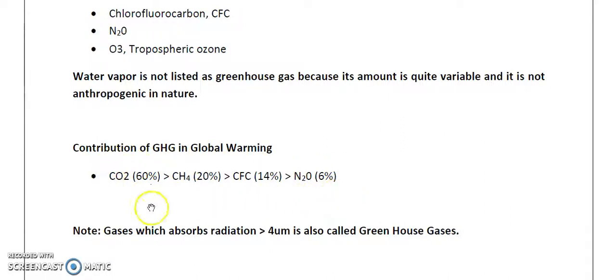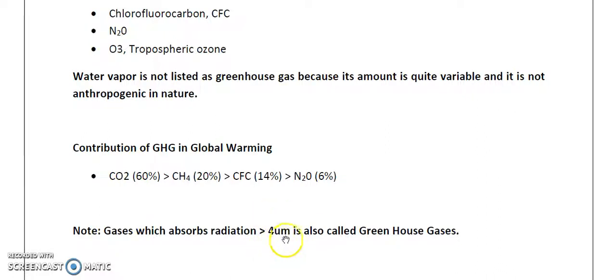A special note: gases which absorb radiation at more than four micrometers are also called greenhouse gases. So it is quite obvious that if a gas absorbs at more than four micrometers, it qualifies as a greenhouse gas.